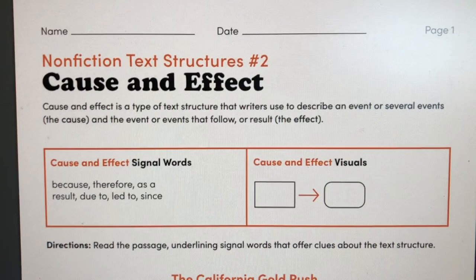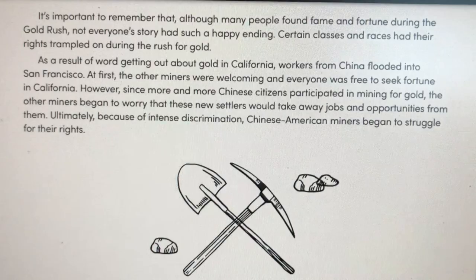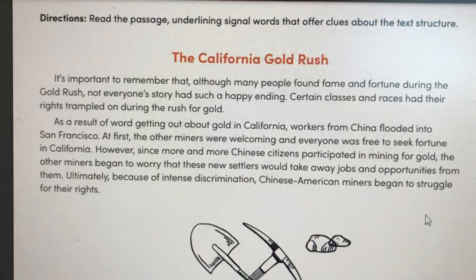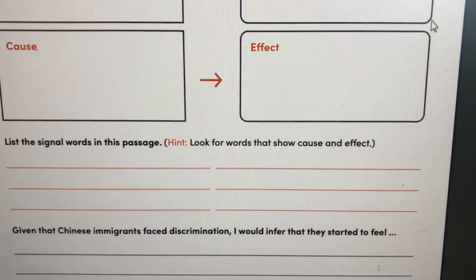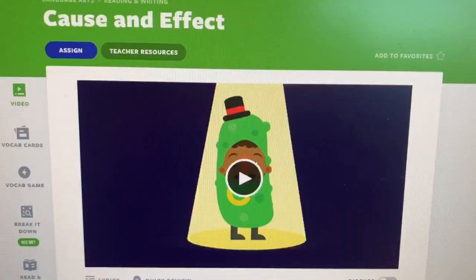I started this morning with my ELL group, who are a little behind my other group. We reviewed cause and effect. They had a warm-up activity on their desk — we call it smart start — which gave them a little paragraph on the California Gold Rush and they had to find cause and effect relationships. This handout is from education.com. They went over signal words for cause and effect, found them within the paragraph, and on the back filled in a cause and effect chart and answered questions related to the passage.